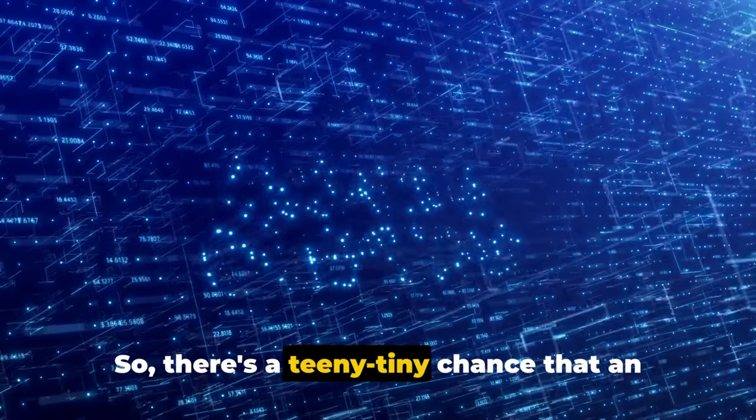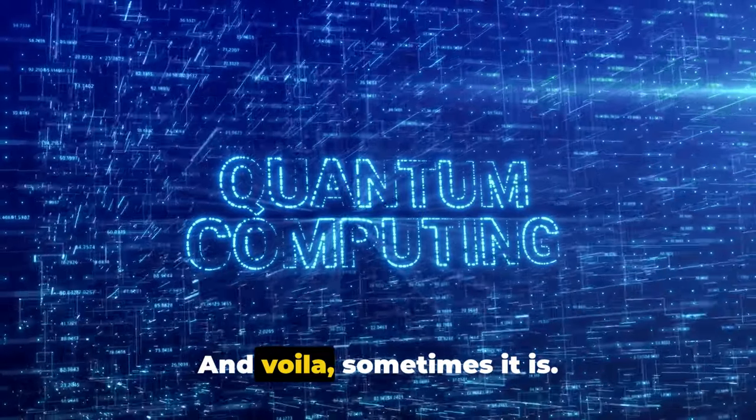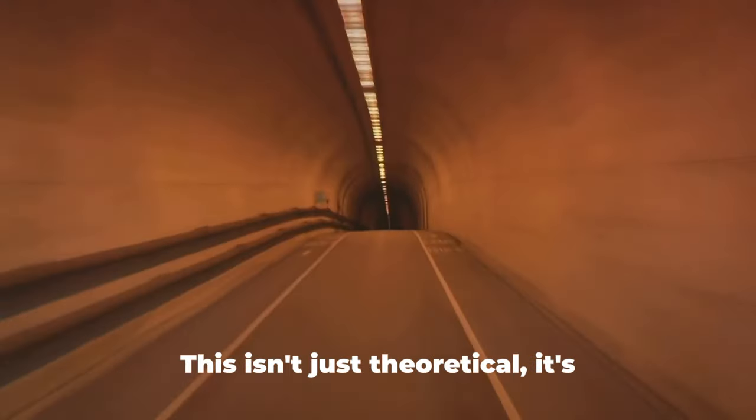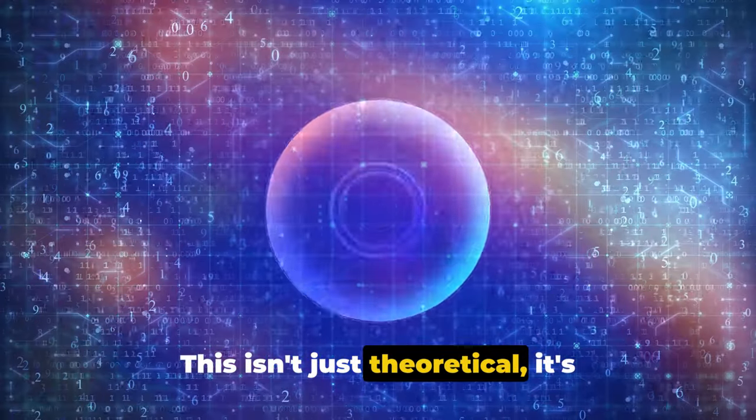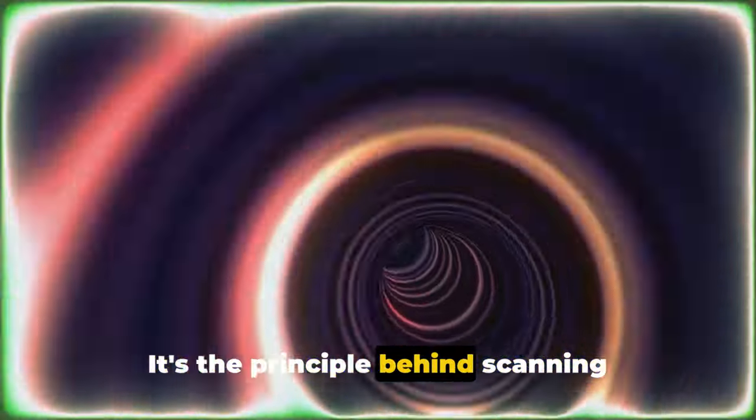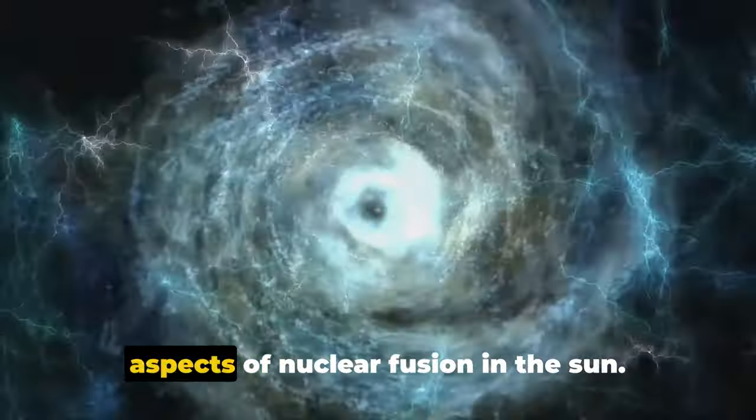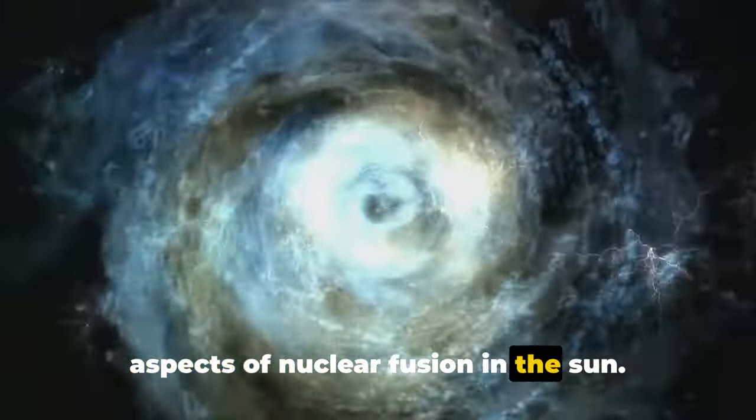These waves represent the probability of a particle's location. So, there's a teeny tiny chance that an electron could be on the other side of a barrier. And voila, sometimes it is. This isn't just theoretical, it's practical too.